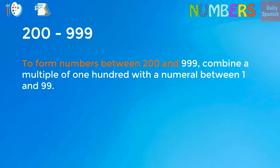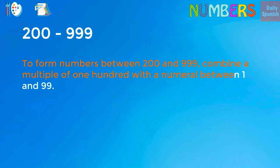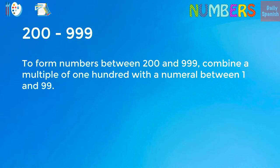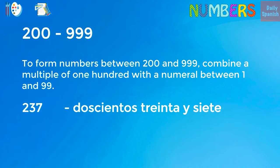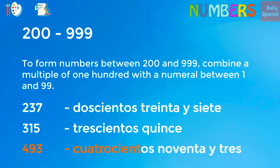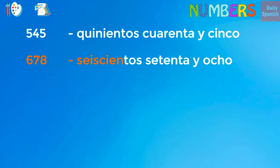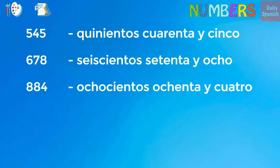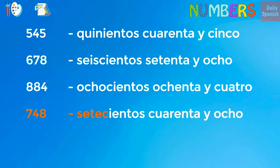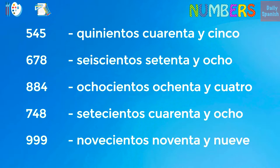To form numbers between 200 and 999, combine a multiple of 100 with a numeral between 1 and 99. Examples: 237, 315, 493, 545, 678, 884, 748, 999.